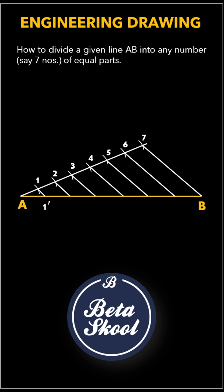These lines cut line AB at points 1', 2', 3', 4', 5', 6'. These points 1' to 6' divide the line AB into seven equal segments.